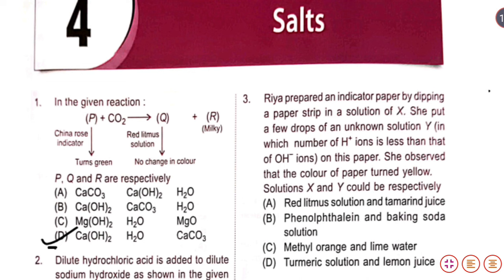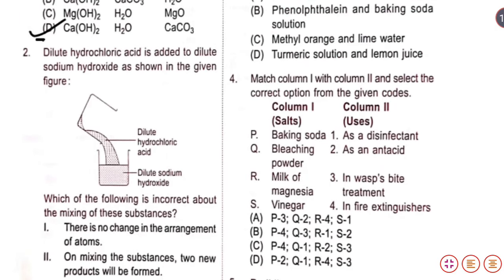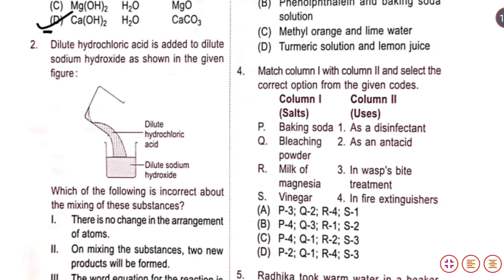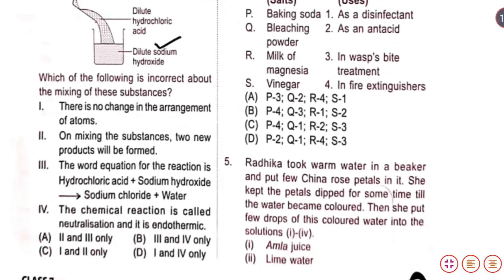Let us look at question number 2. It says: dilute hydrochloric acid is added to dilute sodium hydroxide, as shown in the given figure. Which of the following is incorrect about the mixing of these substances?